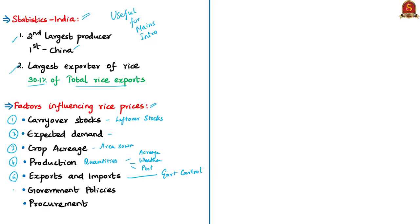The next important factor is government policies, including any change relating to the crop such as MSP, which determines the prices of rice. The final factor is procurement — direct procurement by government agencies like the Food Corporation of India, and storage in warehouses. Changes in tariff and base prices of externally traded goods also have a direct impact on commodity prices. These are the major factors that consistently influence rice prices.